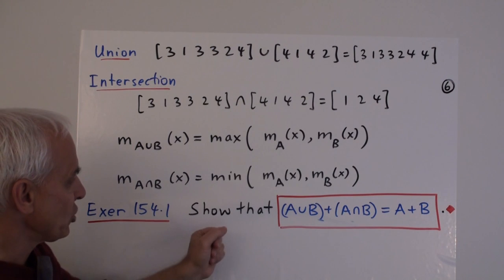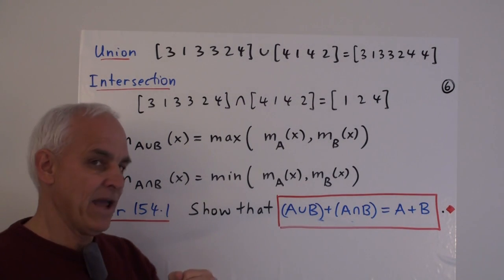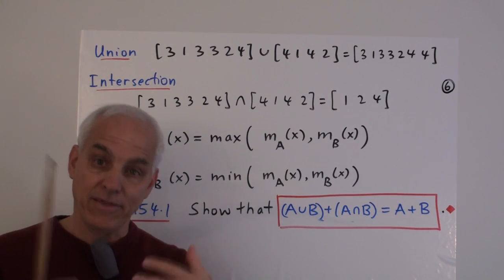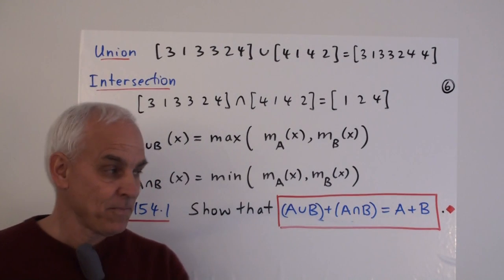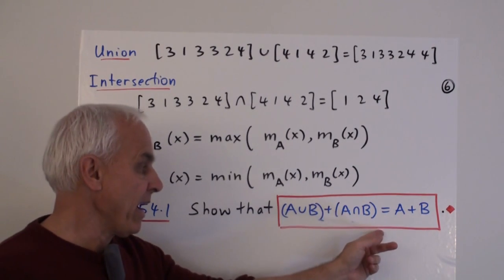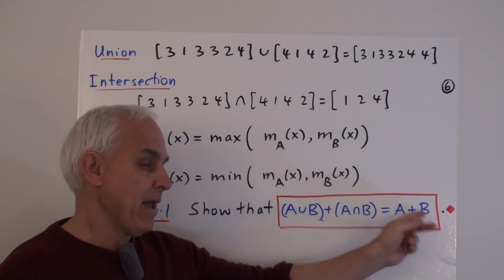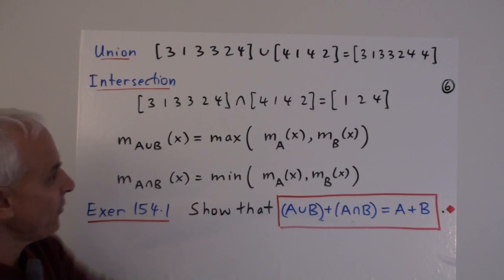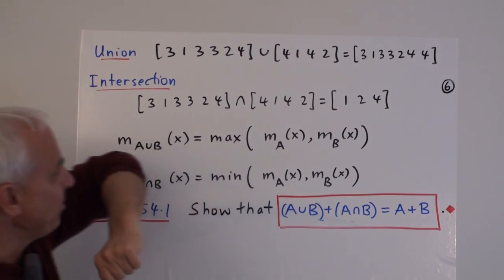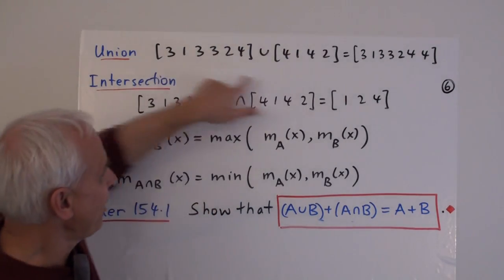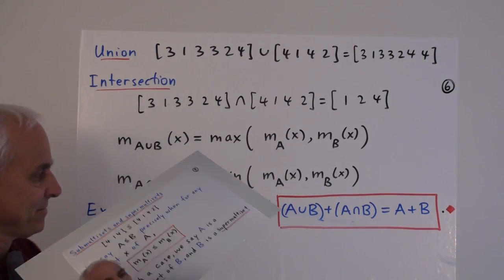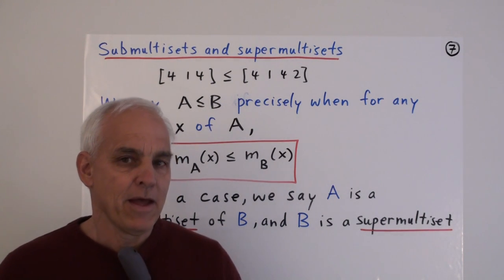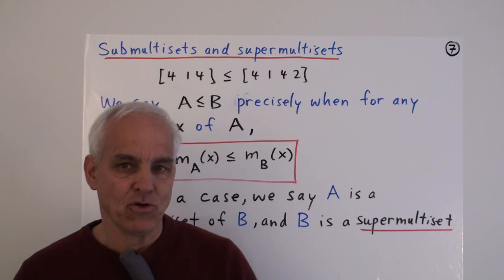And a little exercise for you. Show that if you take the union of A and B, and you take the intersection of A and B, and you add them, that's something we can do with multisets, then you get the same thing as when you just add A and B directly. So, we're going to be talking about the properties of these operations in a further video. But we have to make a little bit of a detour before we do that.